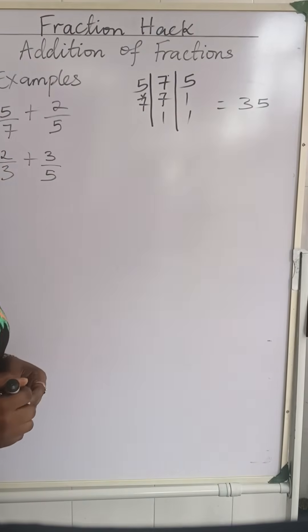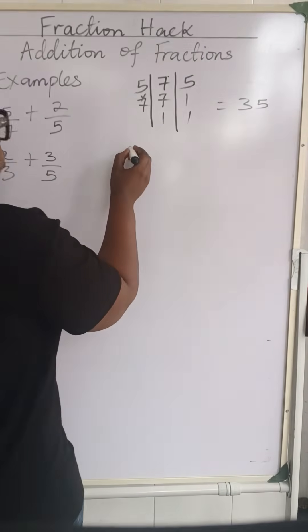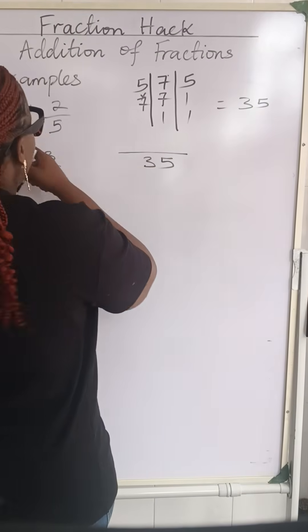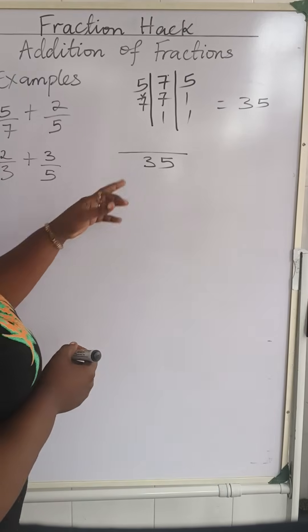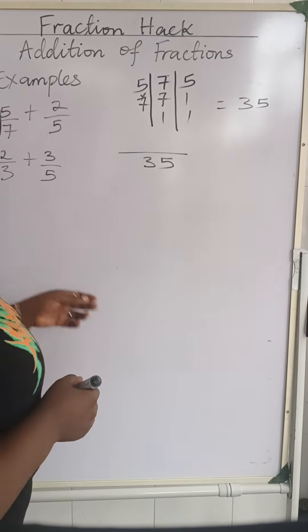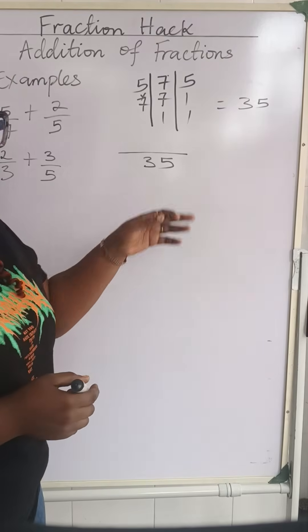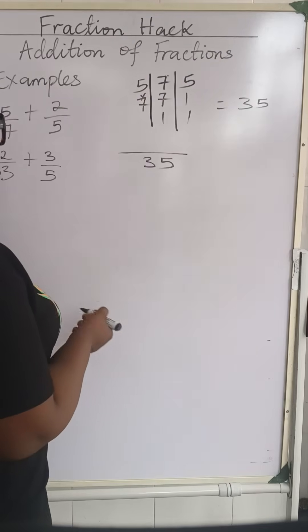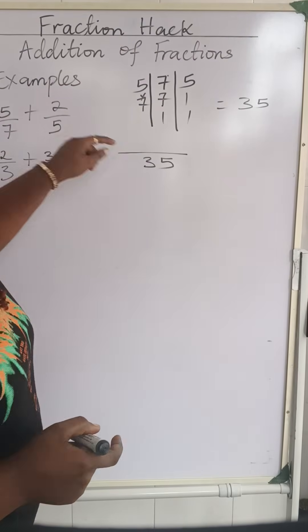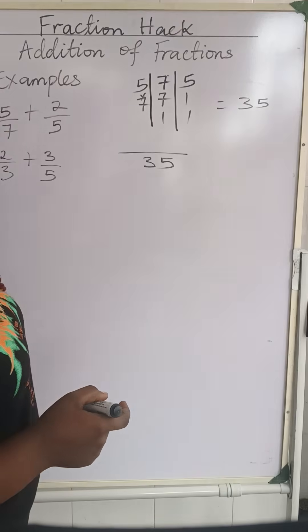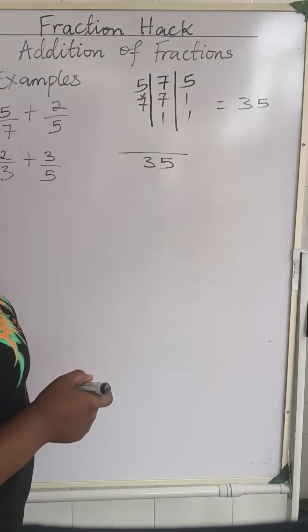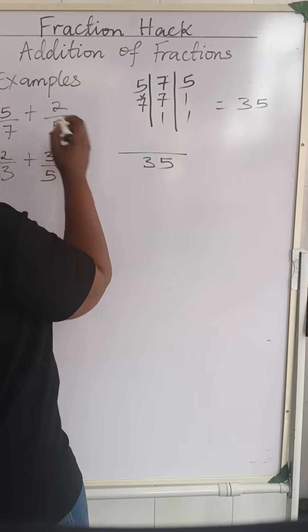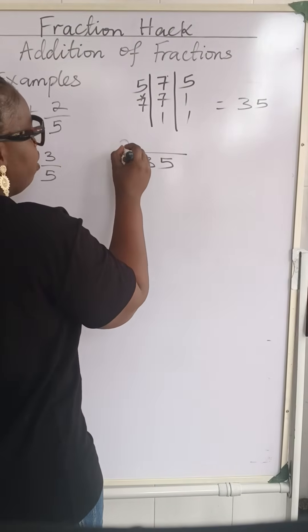So 35 is now the new denominator. We are going to have it this way. You put your 35 here. And then 7 going into 35, what will you multiply by 7 to give you 35? That is 5. And when you get that as 5, you multiply it to the numerator. The numerator here is 5. So 5 from our answer multiply by the numerator which is 5, we are going to have 25 here.